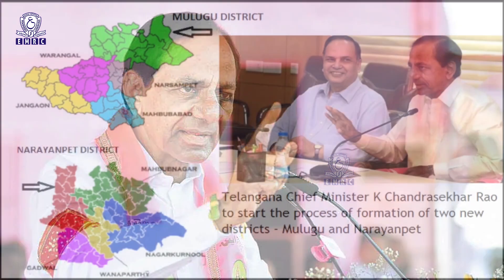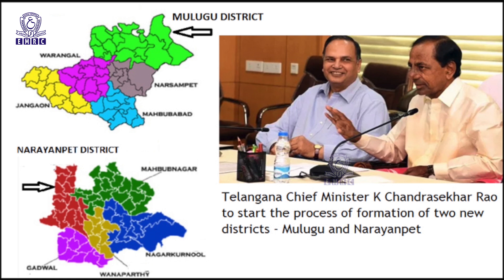Later, in order to fulfill the poll promises made by KCR during the elections in 2018, a draft notification for two more districts namely Mulugu and Narayanpet were released on 31st December 2018, taking the total number of districts in Telangana state to 33.